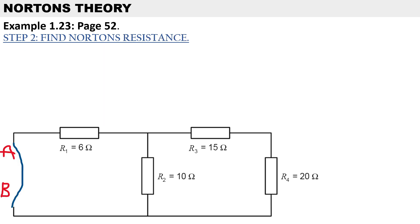The next step is to find Norton's resistance. In this step, we remove the voltage source — I've called that short-circuit AB. By removing the voltage source we can calculate Norton's resistance.